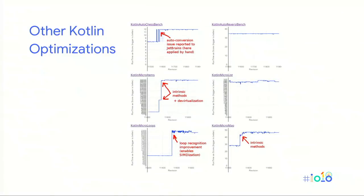Apart from this optimization, we also track Kotlin performance on various benchmarks. Other improvements include improved auto-vectorization of loops, as well as intrinsic methods specifically tailored for Kotlin code to help improve performance. The ART team is always working on improving this performance.